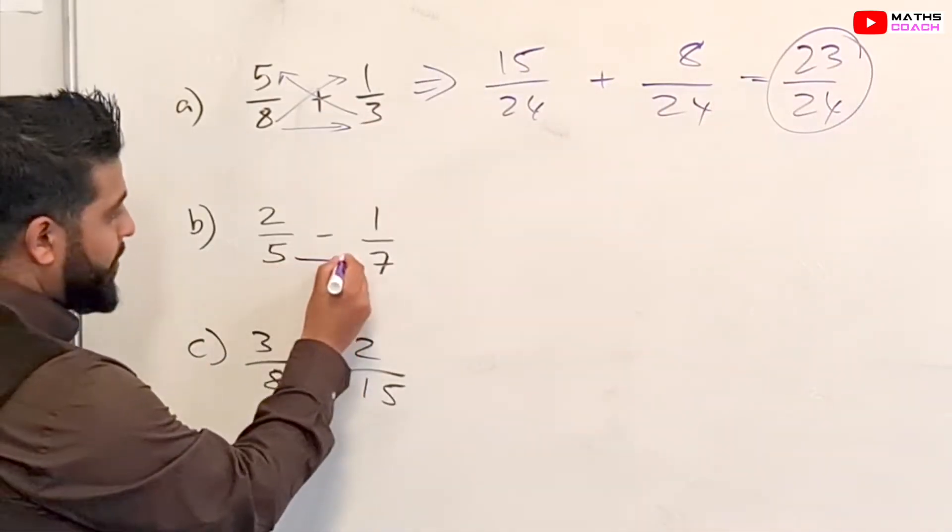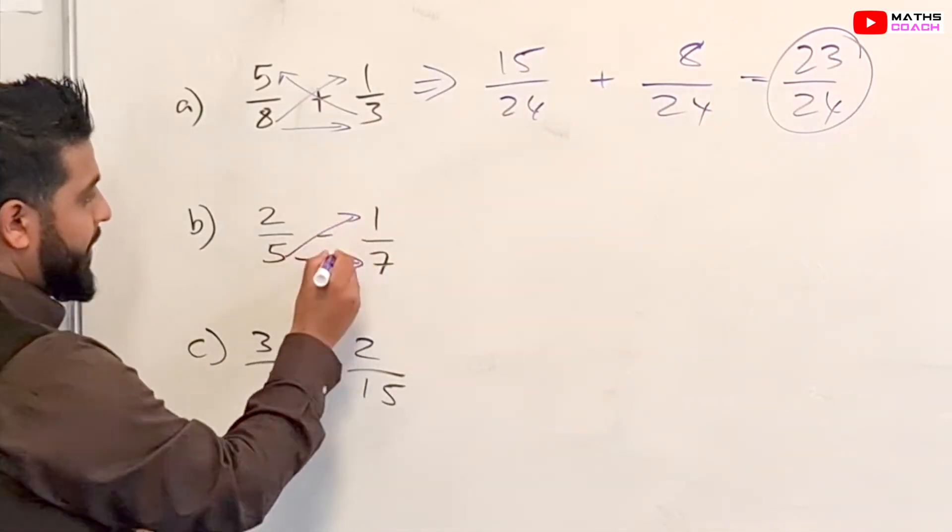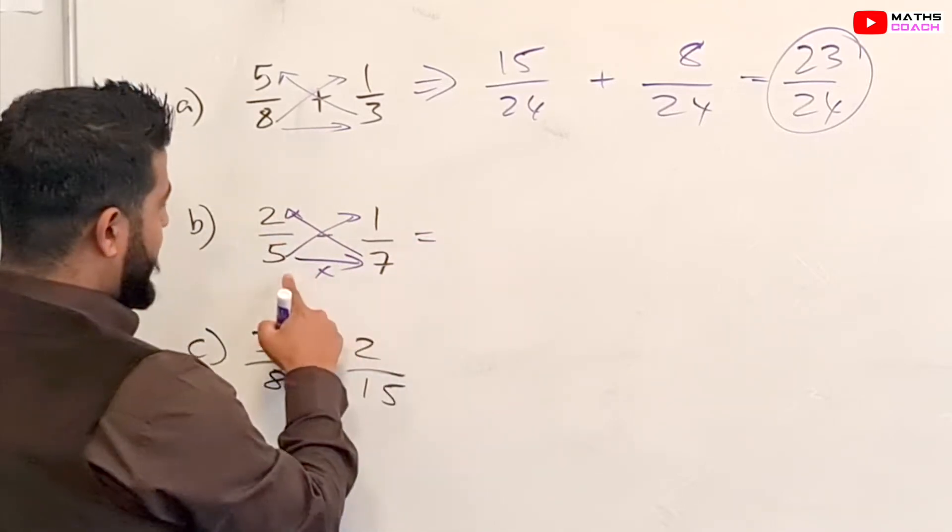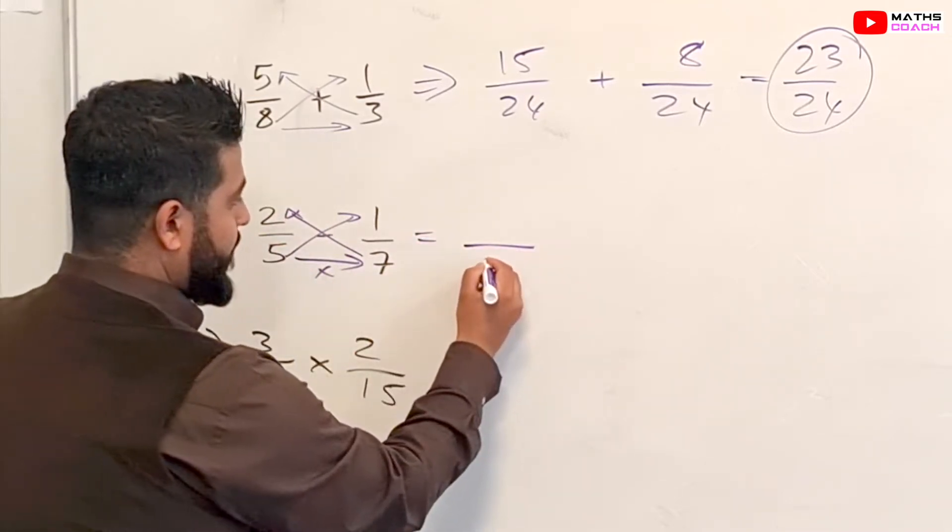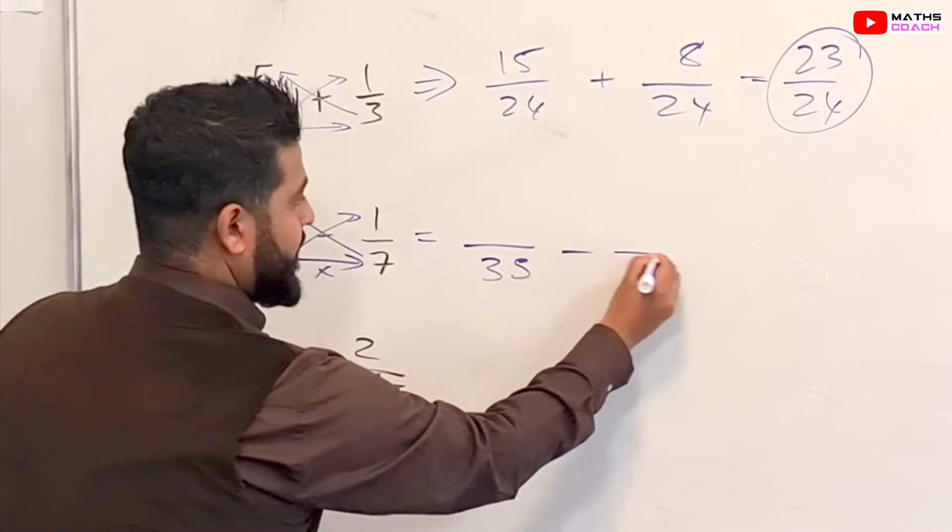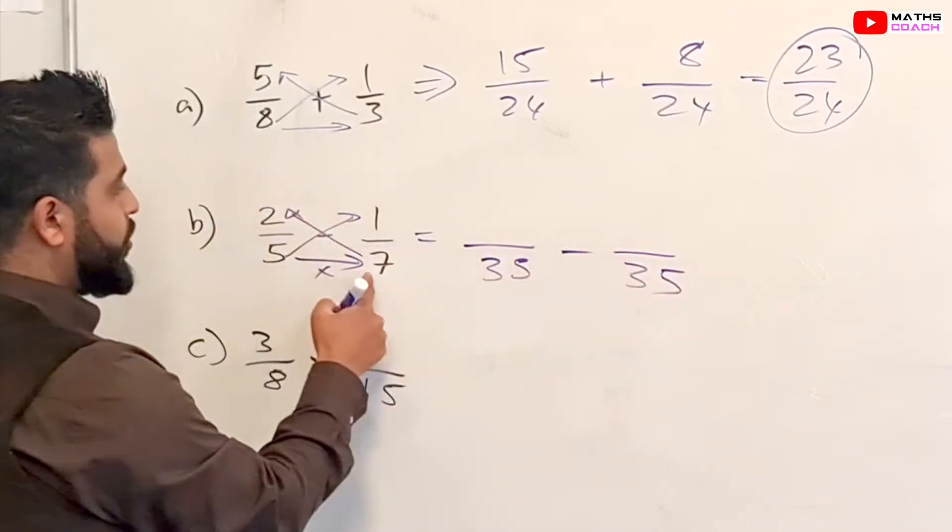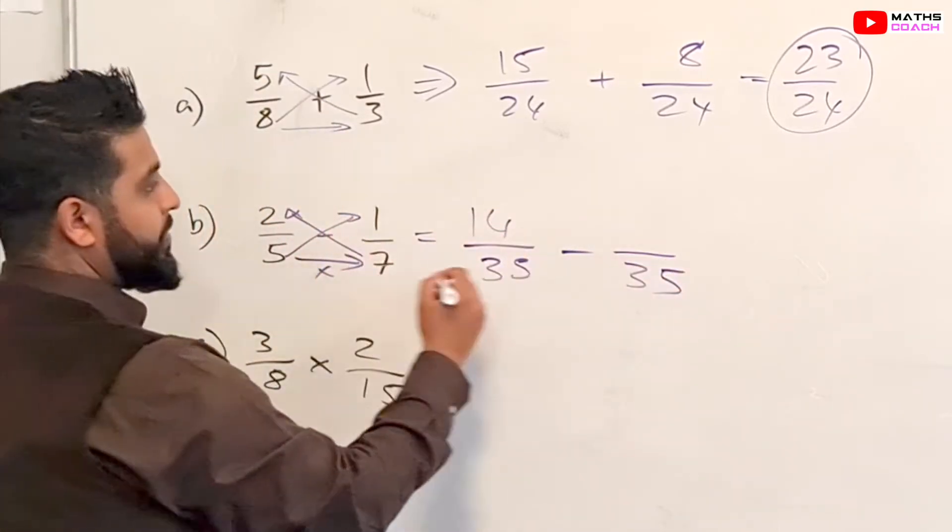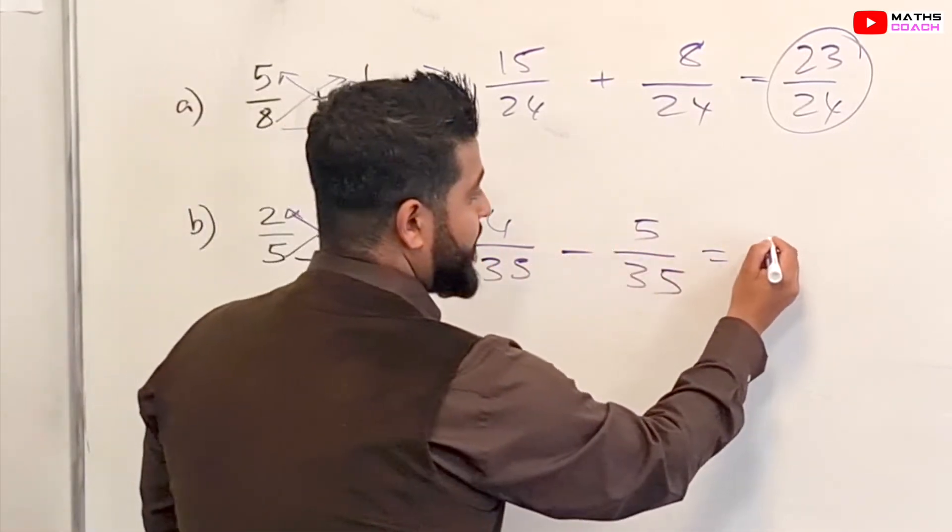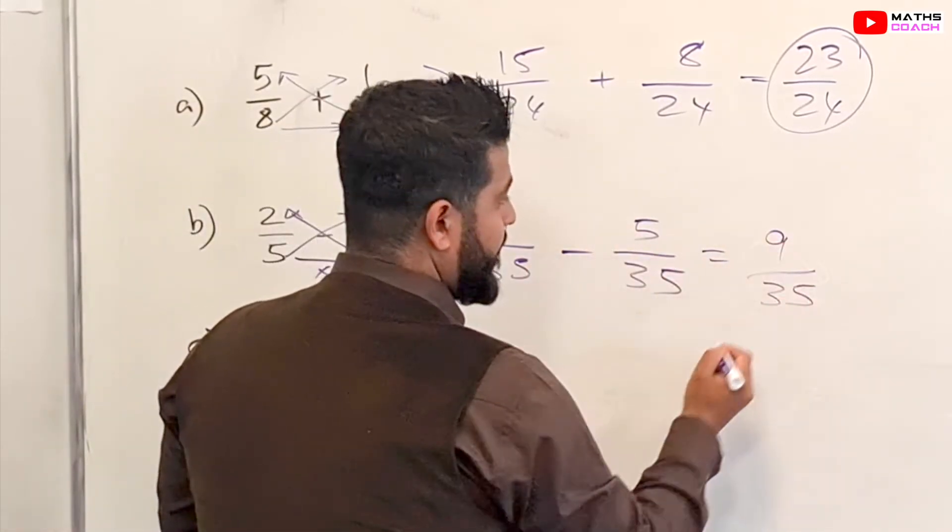Same with this one. We multiply this across, we multiply here, we multiply there. We get 5 times 7 which is 35 and 35 for the second one. 2 times 7 is 14, 5 times 1 is 5. So 14 minus 5 is equal to 9 over 35.